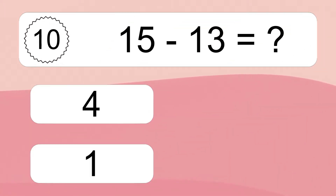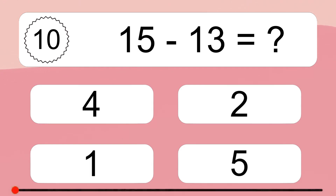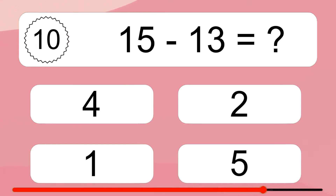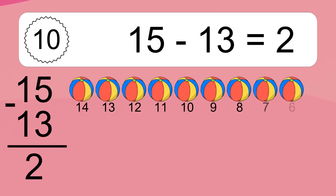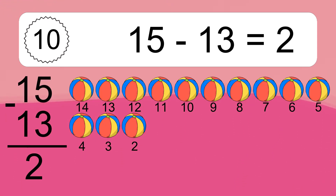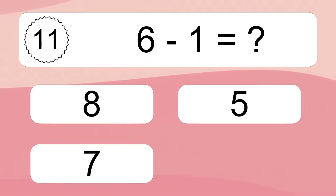15 minus 13 equals what? 15 minus 13 equals 2. Let's count it. 14, 13, 12, 11, 10, 9, 8, 7, 6, 5, 4, 3, 2.